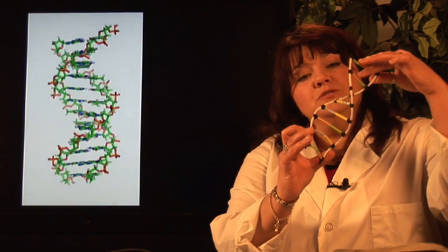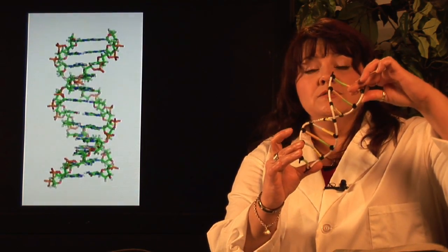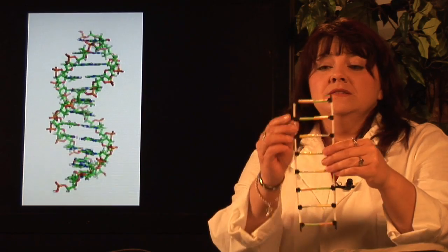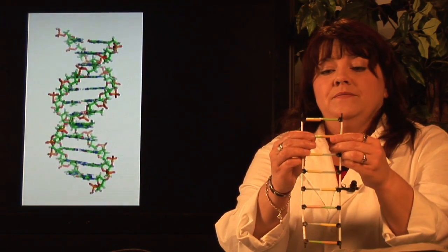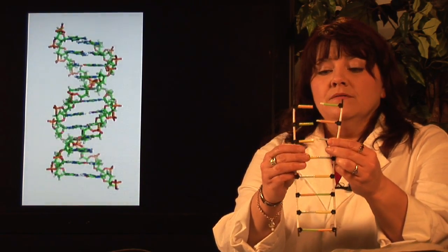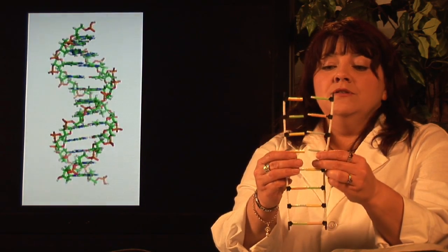So a DNA molecule is twisted up in a cell like this, and when it goes to replicate, it untwists and it begins to unzip. And what's going to happen is a new DNA strand is going to form.